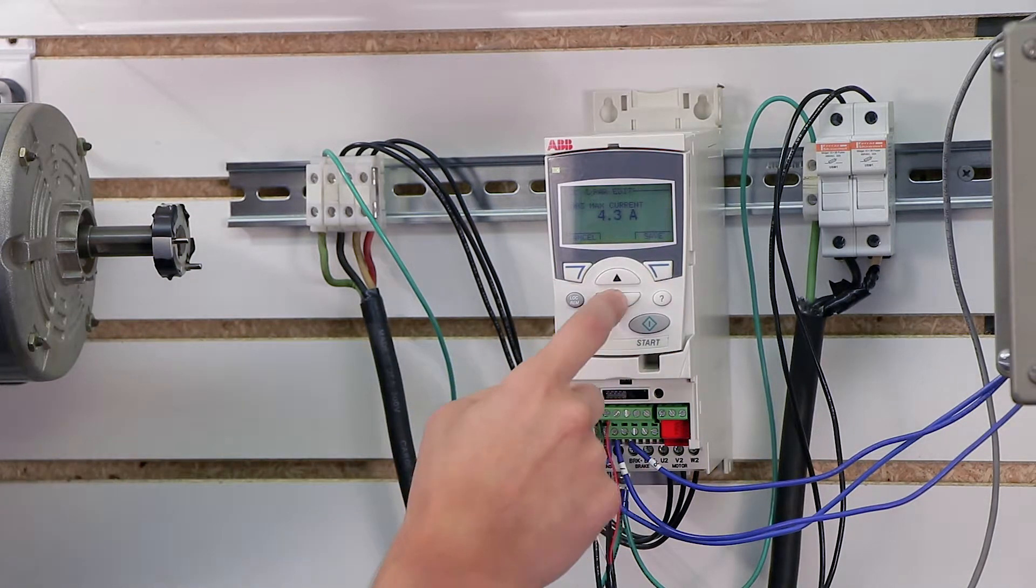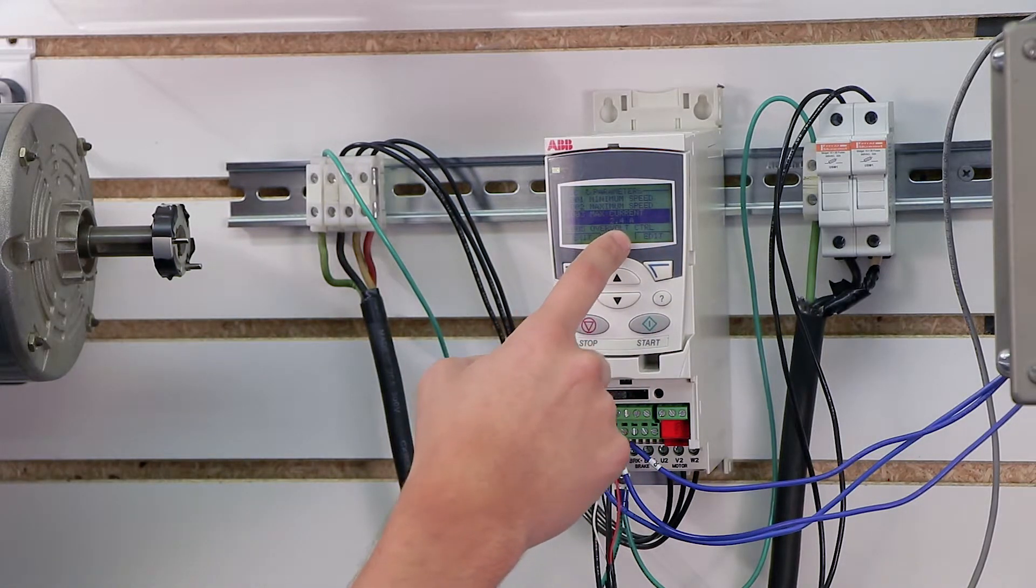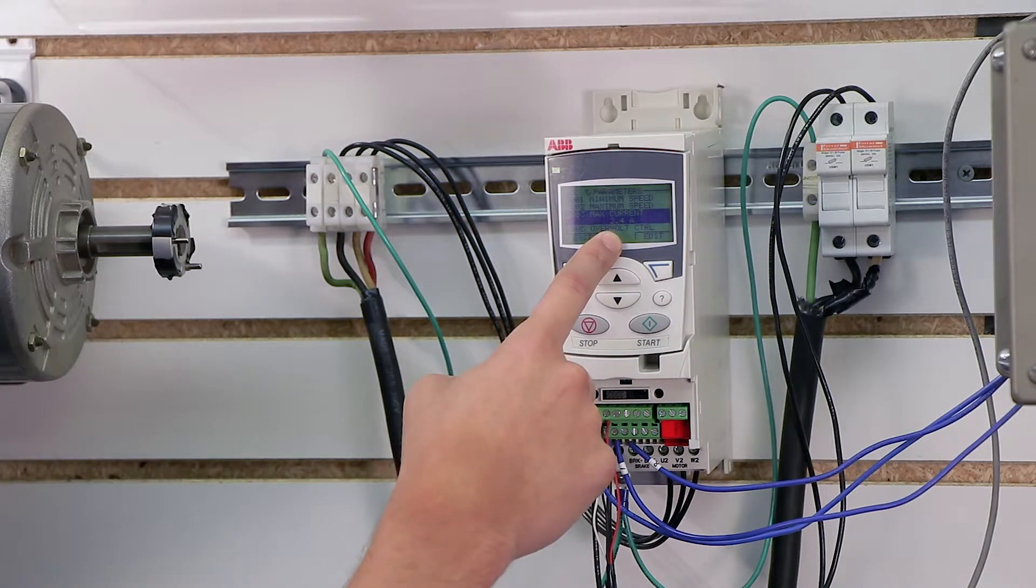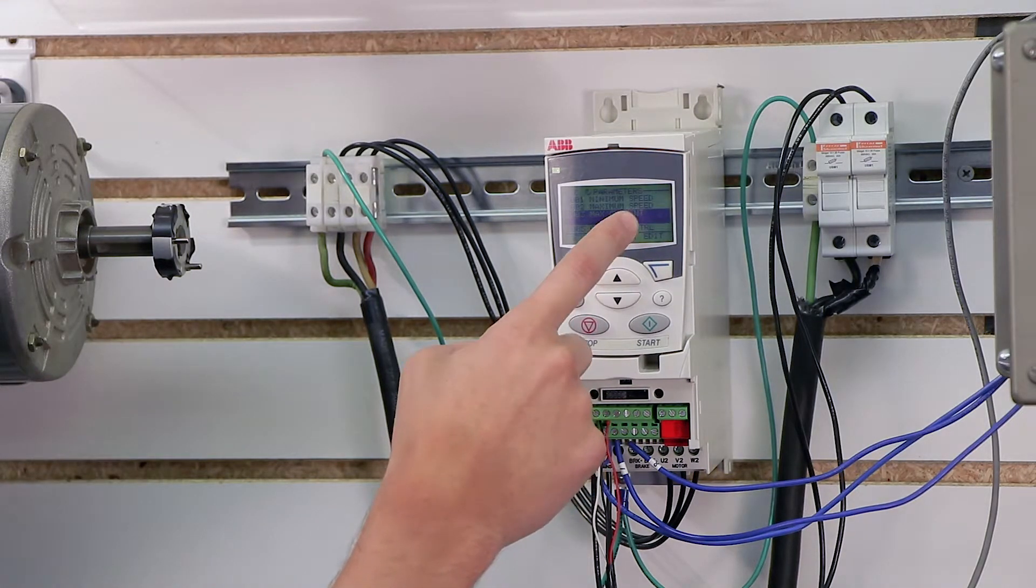This is actually a step that a lot of people tend to ignore, which they shouldn't, because this can actually let the drive put more current into your motor than it's designed to handle. So you want to make sure you set this parameter to 2.4 amps or whatever the full load amp rating is on your motor. And that sets the overload.